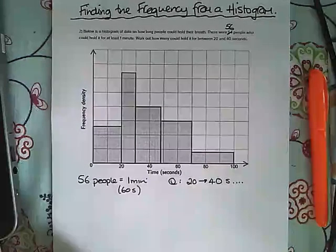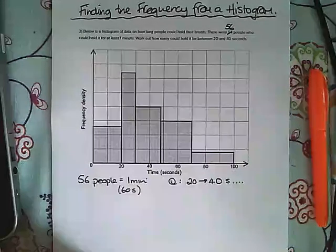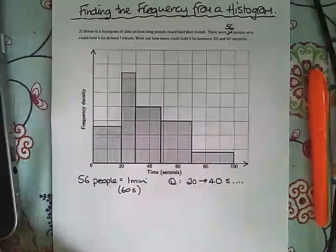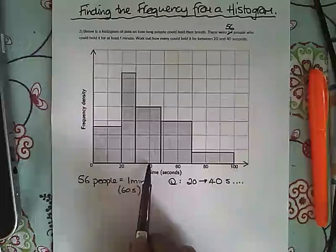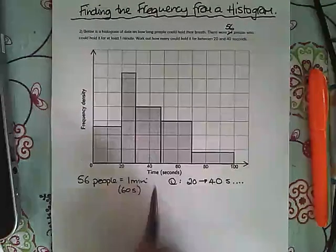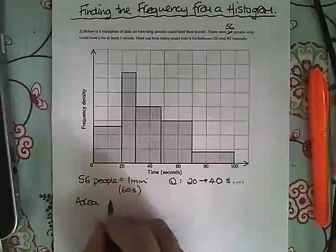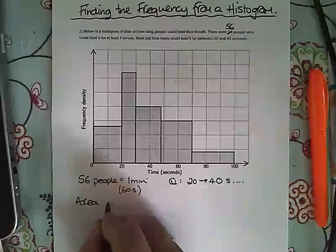What we're going to do is use the area to work out how many people are in that category, the 20 to 40 second category. The area of the graph represents the frequency.